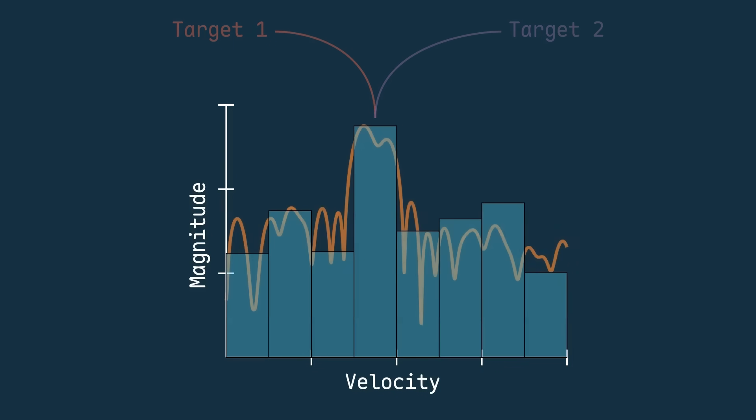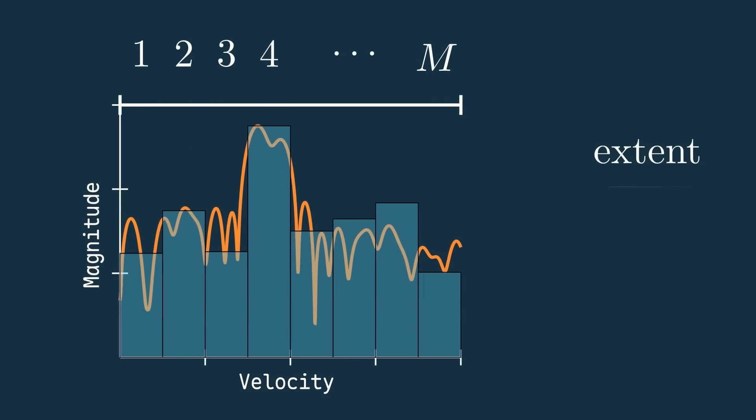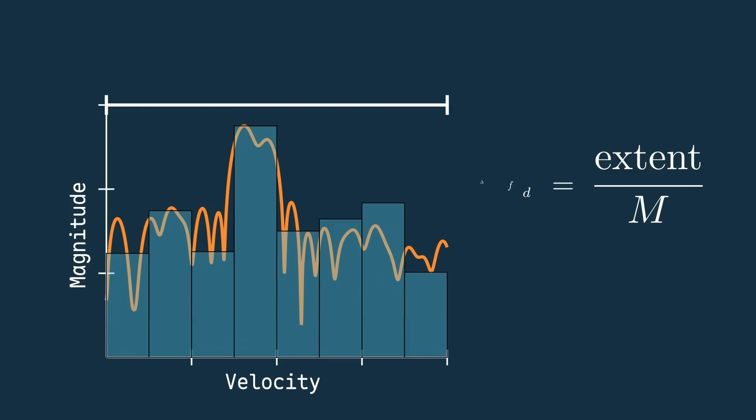We know the number of samples along this axis because it's just the number of pulses we transmit, so if we knew the extent of this axis, we could just take that extent and divide by m to get the difference in velocity between each cell, effectively giving us the velocity resolution.